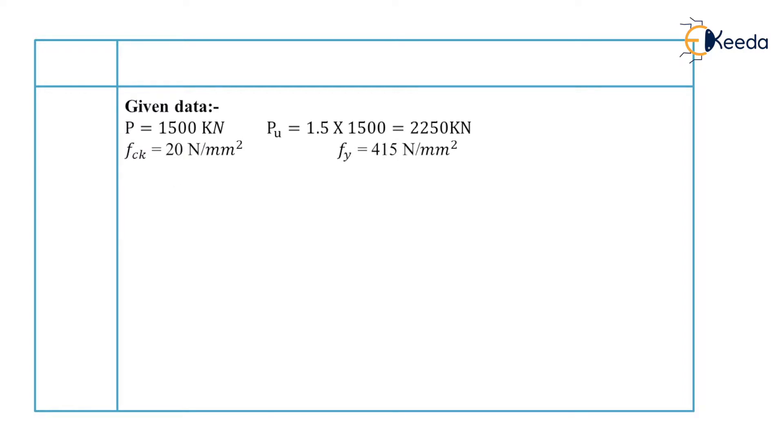Fck is given as 20 N per mm square. Fy is given as 415 N per mm square. L is given as 4 meter and the condition is given here that effectively held in position and restrained against rotation at both sides.